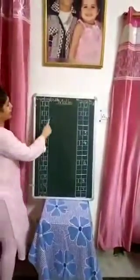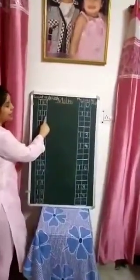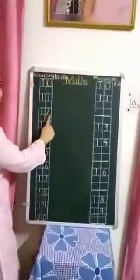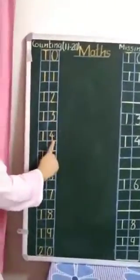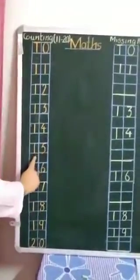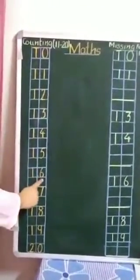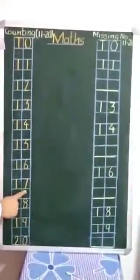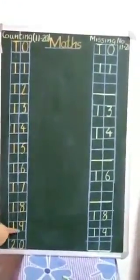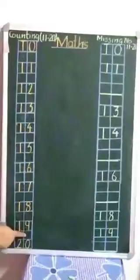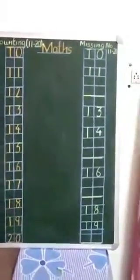Let's start. Listen carefully. Eleven, twelve, thirteen, fourteen, fifteen, sixteen, seventeen, eighteen, nineteen, and twenty.